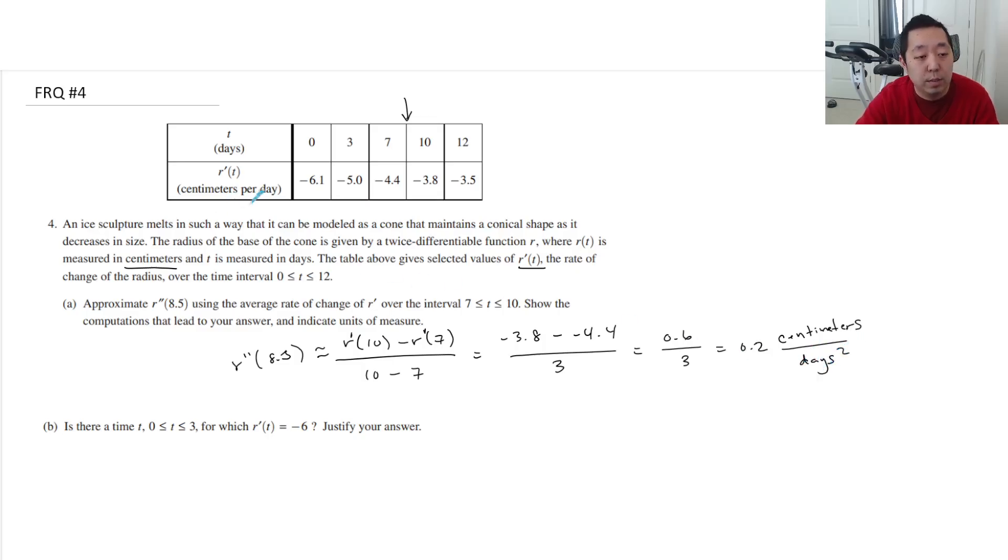Is there a time for which r'(t) is equal to -6? So I would look from 0 to 3 here where it's -6. So this is just looking at the y values of r'. It's -6.1 and it's -5. I'm just looking at intermediate value theorem there. I just know that it must pass through -6 at some point. So we say yes.